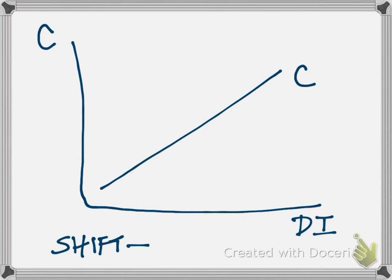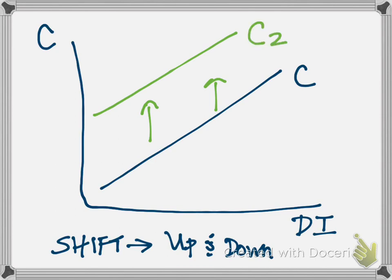It's going to be different than when we were talking about shifts of the demand and supply curve in an earlier chapter. Those shifts were left and right. Here, our shifts are going to be thought of as up or down. If we want to show an increase in consumption, then we shift up, like to line C2. That shows an increase.